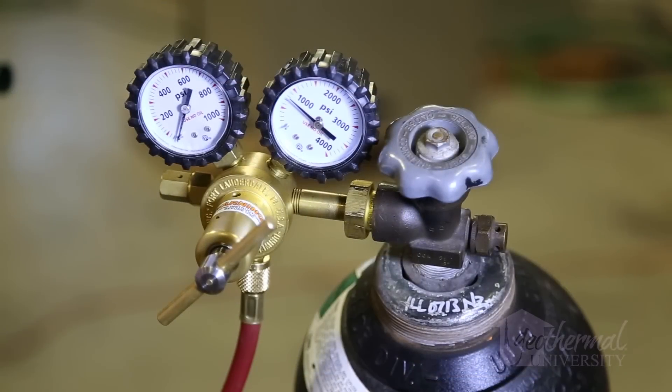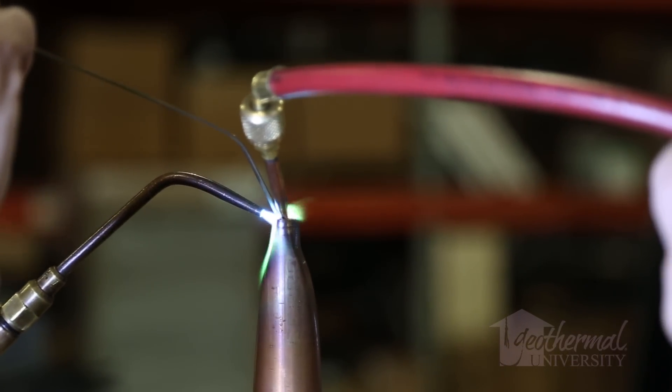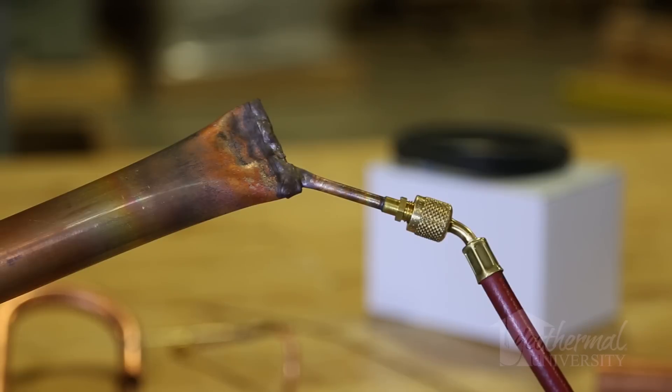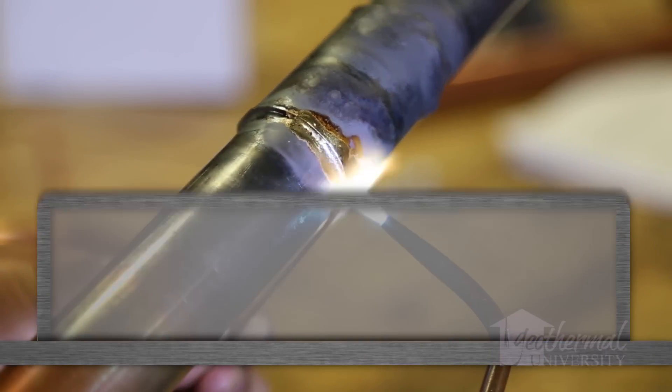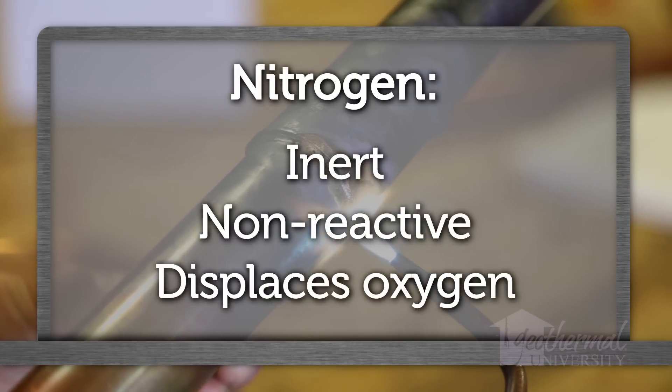To prevent oxidation, flow dry nitrogen through the tube during brazing. Nitrogen is inert, non-reactive, and displaces the oxygen to prevent scale formation.